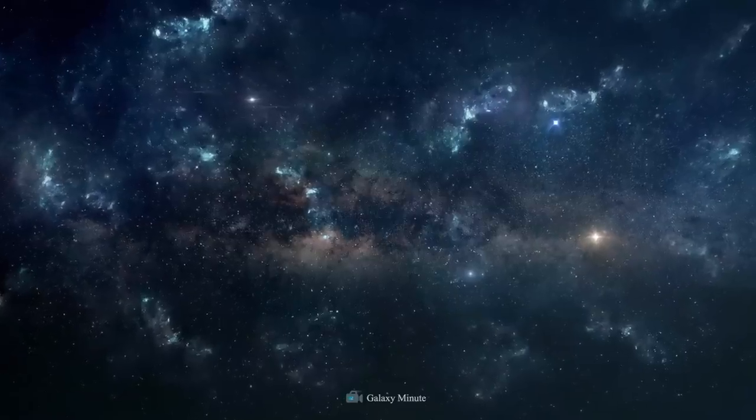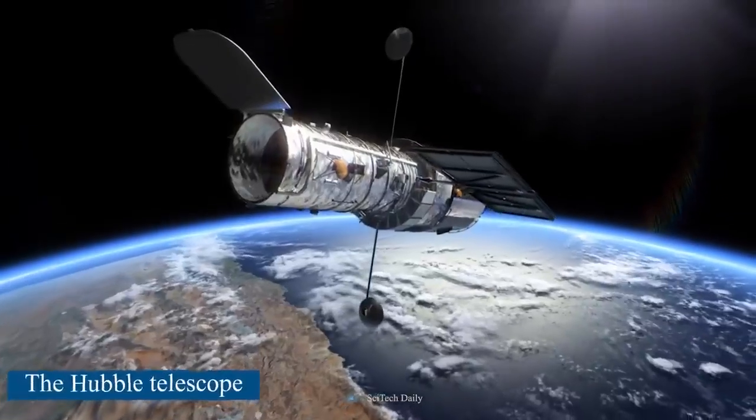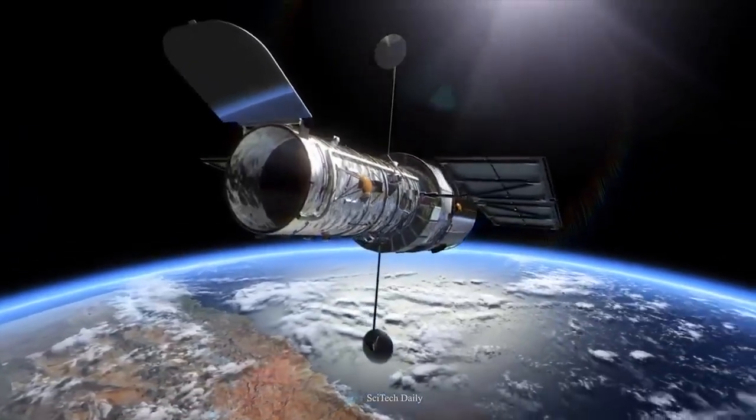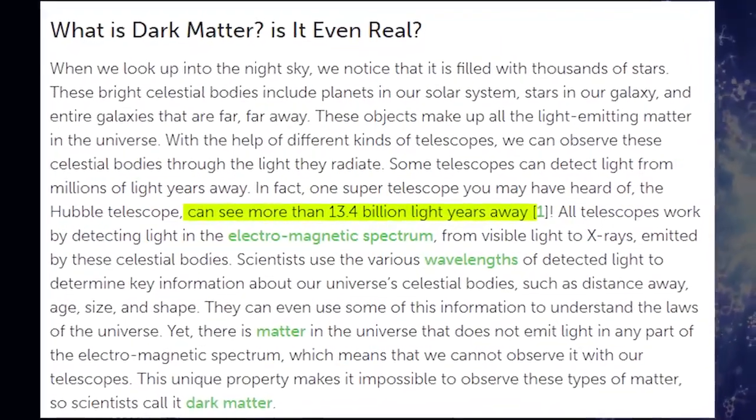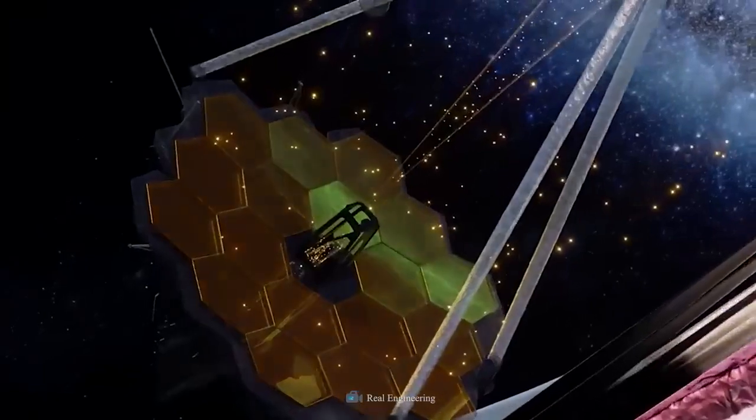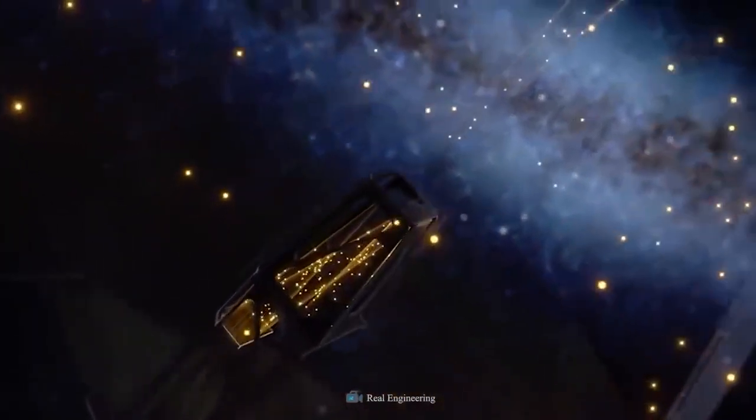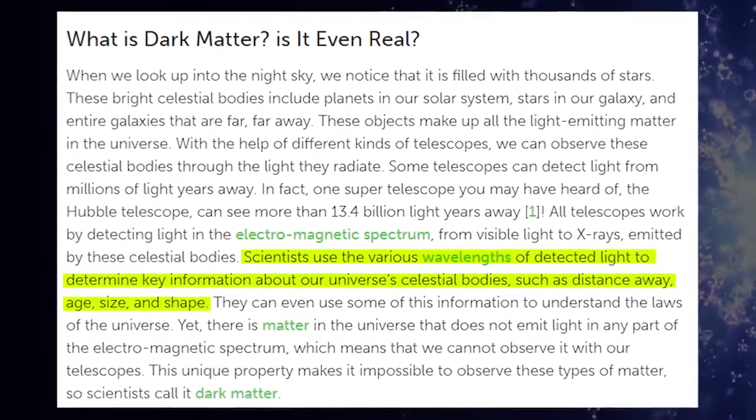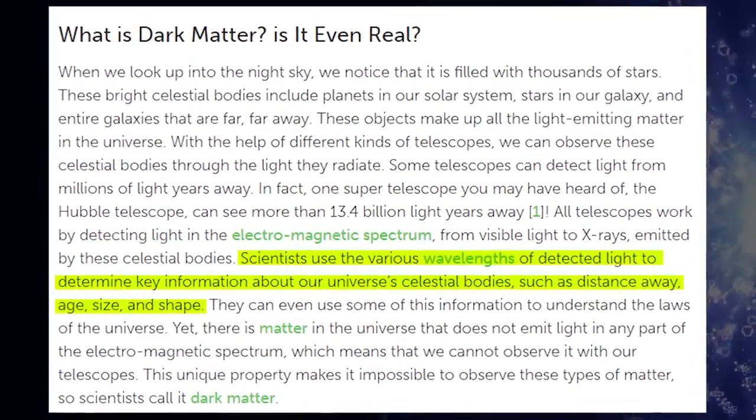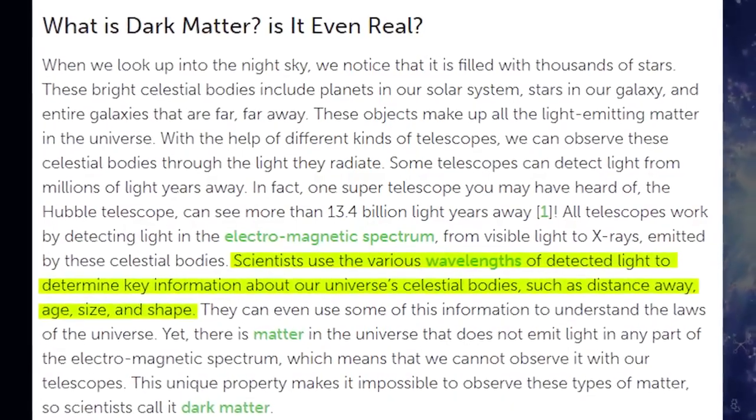Light from millions of light-years away can be detected by some telescopes. The Hubble telescope can detect objects more than 13.4 billion light-years away. Light from these objects is detected by telescopes across the electromagnetic spectrum. Distance, age, size, and shape are only a few of the factors that scientists use to deduce about the heavenly bodies in our universe.